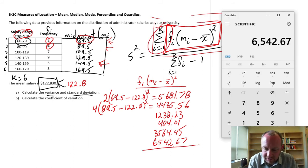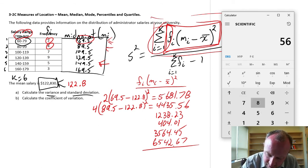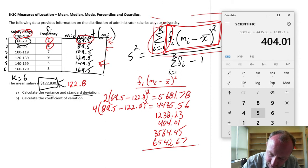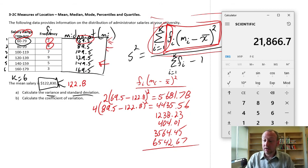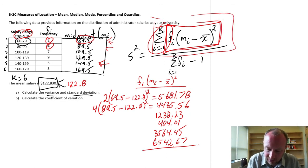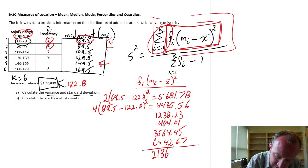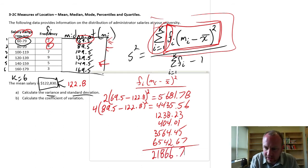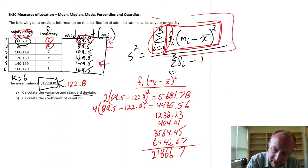So if I add all of these up, 56, 44, 35, plus 12, 38, plus 404, plus 35, 64, 65, 42. Phew! 21866.7. Let me just check that I've written that down right. Good. So that's our numerator.